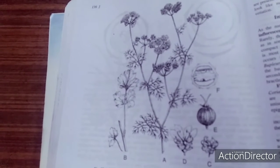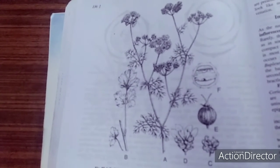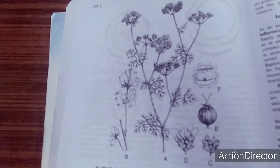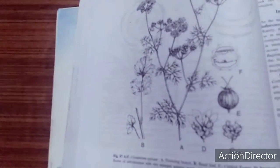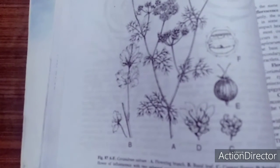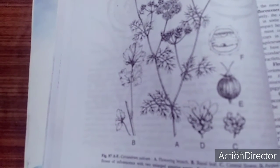A dry, indehiscent, two-chambered fruit which develops from inferior bicarpellary ovary. When ripe, it splits into two indehiscent one-seeded mericarps.